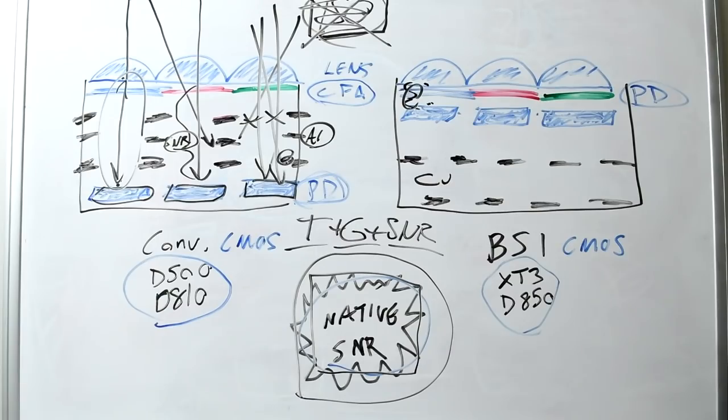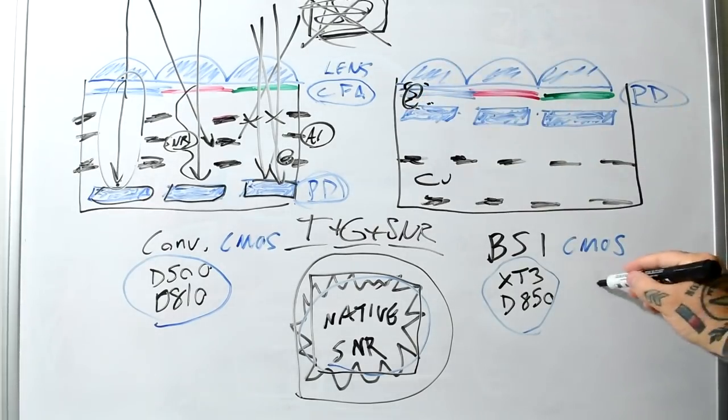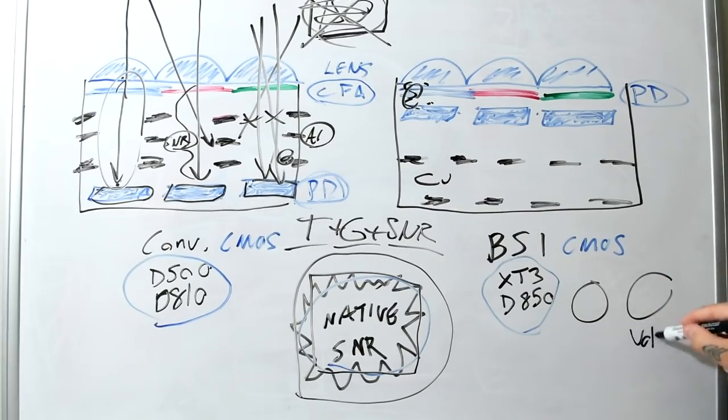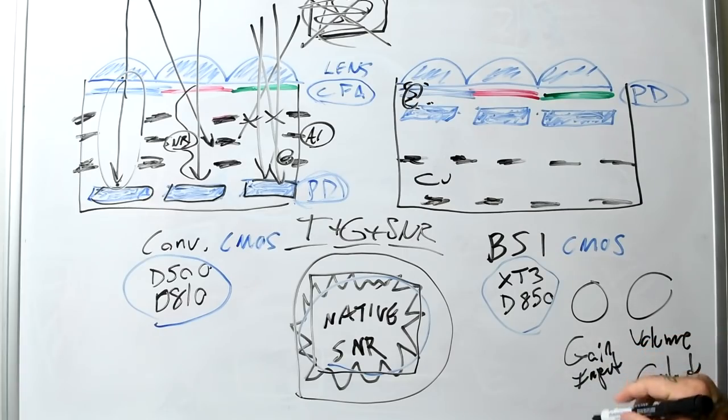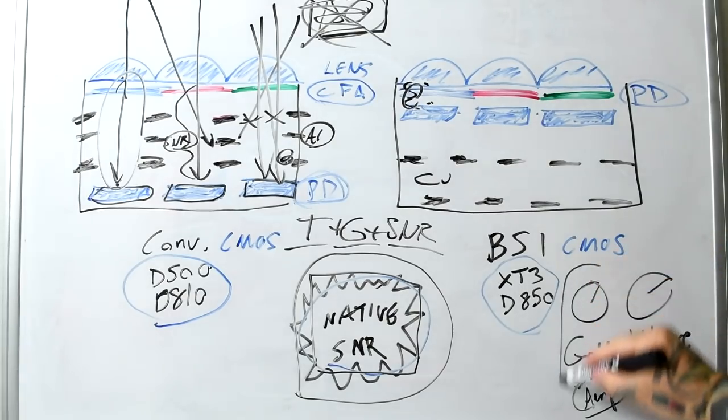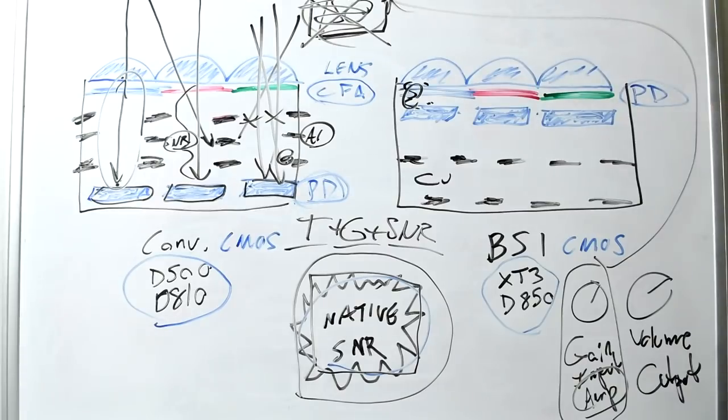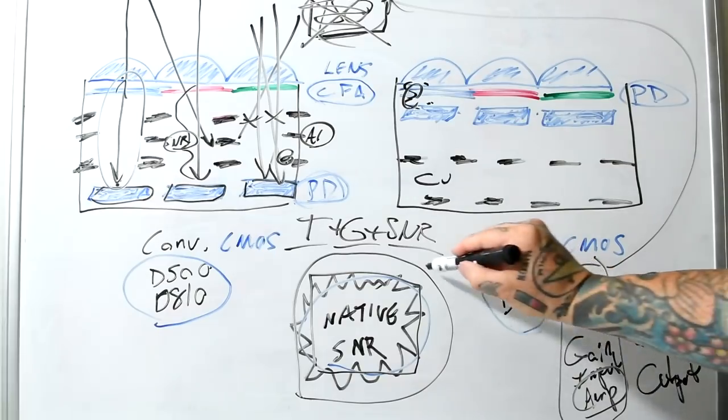ISO is applied gain after the image has been taken. After the image is captured, after the AD converters, we actually have applied gain. That's why on professional radios, there's two knobs. There's one called volume, which is output, which is amplifying the output. And then we have a gain knob on professional radios, and that's input, input amplification, or an input amp. Input amplification is ISO. Most people don't know that. Anyway, so native SNR is incredibly important.